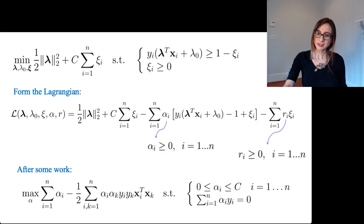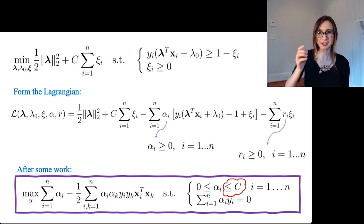And if you had looked very carefully at the separable case dual, you'd notice that this looks familiar because it's almost exactly the same. The only difference is that upper bound of C on the alphas. So that's pretty cool, right? You get almost the same dual.